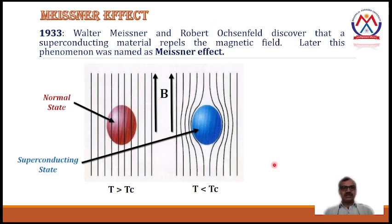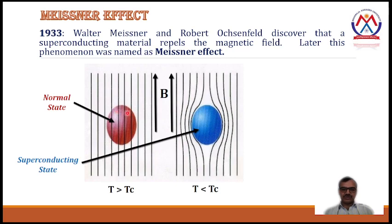Now let's discuss the Meissner effect. In 1933, Walter Meissner and Robert Ochsenfeld discovered that a superconducting material repels the magnetic field. Later, this phenomenon was named the Meissner effect. As you can see, there is a red colored ball representing the normal state of the material, and these lines are showing the magnetic field. In the normal state, magnetic lines of force are passing through the material.